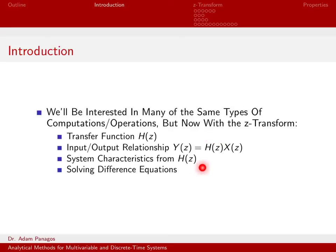We can also look at H(Z) to find system characteristics. Sometimes in the time domain certain properties of a system are not apparent, but in the Z-domain those properties become more apparent. Also, just like the Laplace transform was very useful for solving differential equations — allowing you to go into the S-domain and algebraically solve them — the same thing happens with the Z-transform for difference equations. We'll be able to solve difference equations very easily by going into the Z-domain and algebraically solving for polynomials and roots of polynomials.